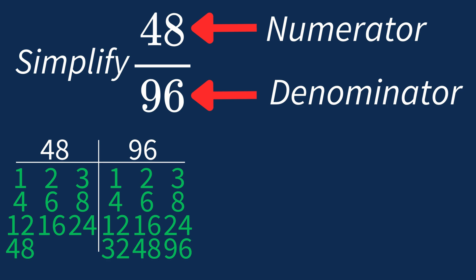So the largest common factor between 48 and 96 is 48. This means we can divide both the numerator and denominator by 48 to simplify the fraction. Dividing the numerator 48 by 48 gives us 1. Dividing the denominator 96 by 48 gives us 2.